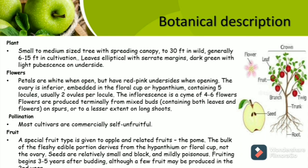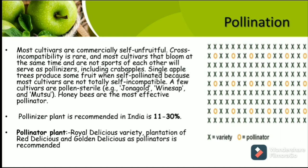Pollination: Most cultivars are commercially self-unfruitful. The apple fruit is a type of false fruit called the pome. The bulk of the fleshy edible portion derives from the hypanthium or floral cup, not the ovary. Seeds are relatively small, black, and mildly poisonous. Fruits begin 3 to 5 years after budding, although a few fruits may be produced in the second year. Cross-incompatibility is rare. Most cultivars that bloom at the same time are not sports of each other and will serve as pollinizers, including crab apples.